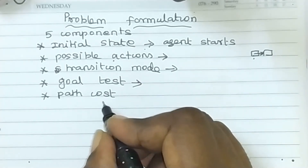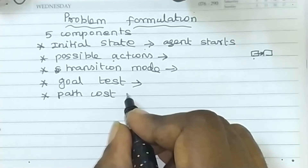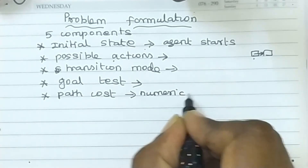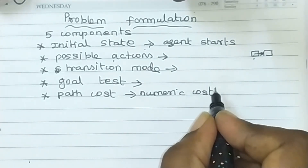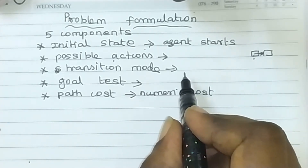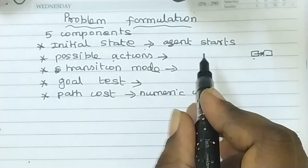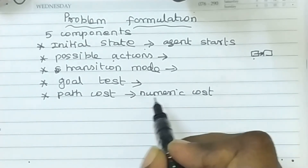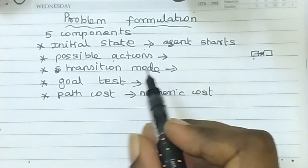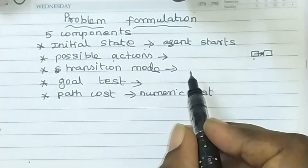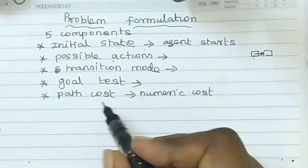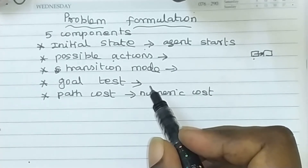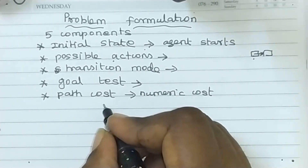The last component is path cost. Path cost assigns a numeric cost to each path. As the agent moves from state to state to finally reach the goal, we assign a numeric cost to each path. The number of steps in the path is called path cost.